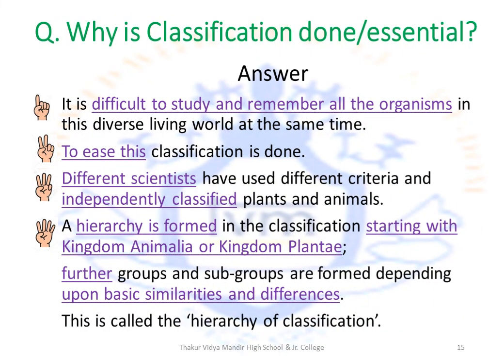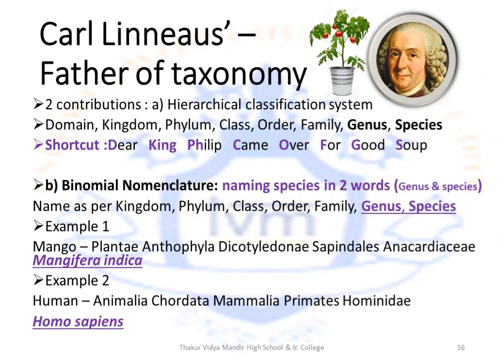Why is classification done or why is it essential? It is difficult to study and remember all organisms in this diverse living world at the same time, so classification is done to ease this. Different scientists have used different criteria and independently classified plants and animals. A hierarchy is formed in classification that starts with Kingdom Animalia or Kingdom Plantae. Further groups and subgroups are formed depending upon basic similarities and differences — this is called the hierarchy of classification. If Charles Darwin helped us how to classify, then Carl Linnaeus showed us where to classify.